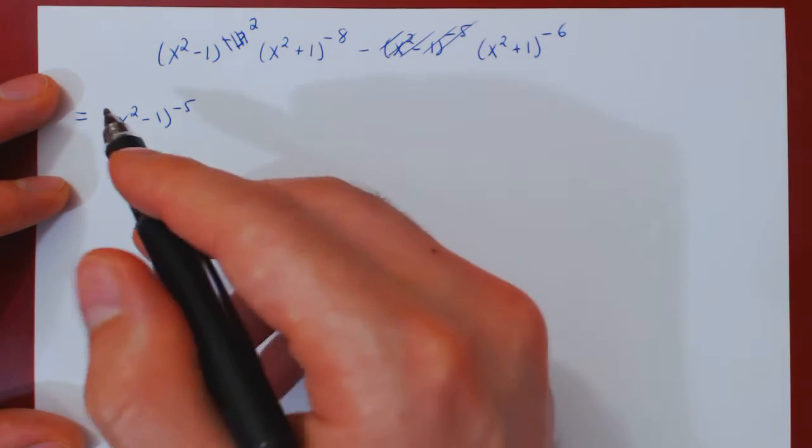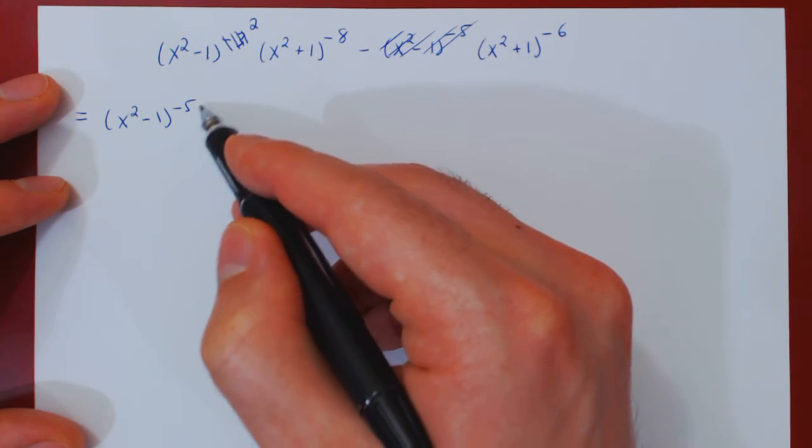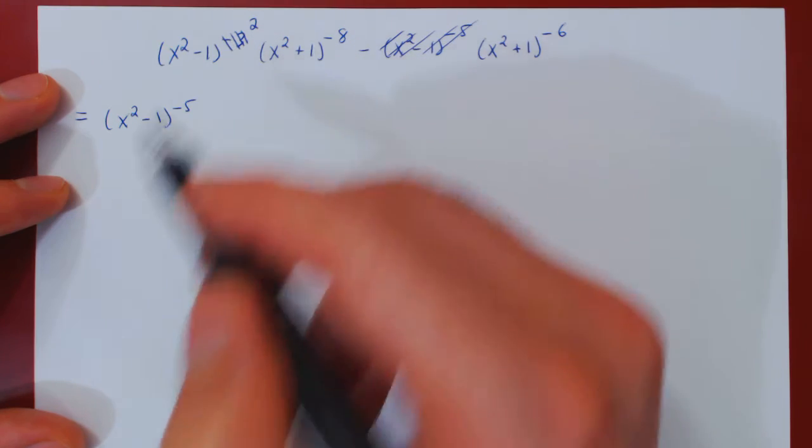And of course you can verify, if you multiply this times this, you add the exponents, and negative 5 plus 2 is negative 3.